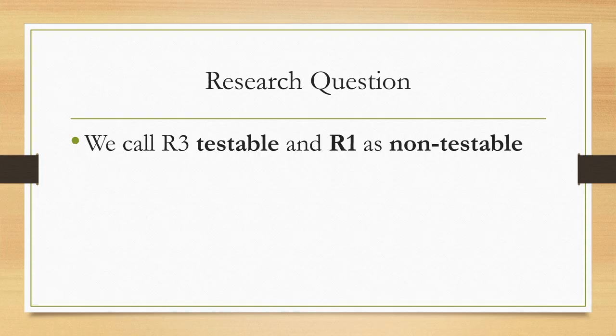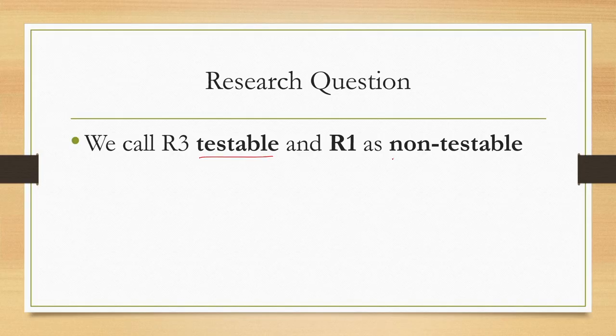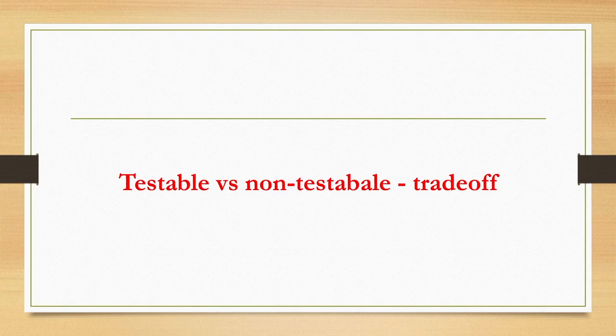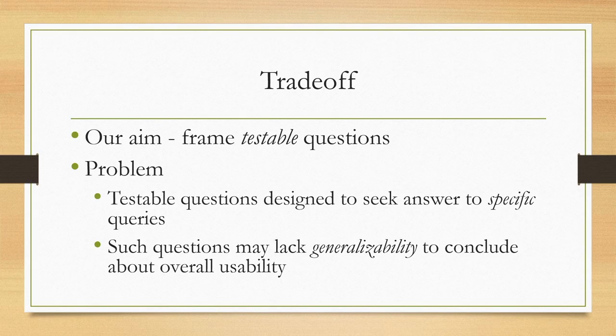When a research question involves measurable quantities, we call it testable. When it does not involve measurable quantities, we call it non-testable. So RQ3 is testable whereas RQ1 is non-testable. There is a trade-off between testable and non-testable research questions — each has its own positive and negative sides, and that trade-off needs to be balanced when forming research questions.